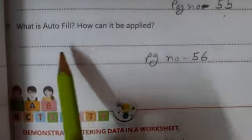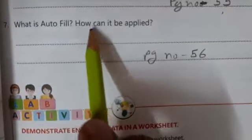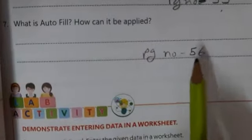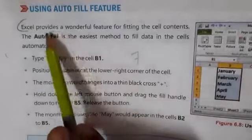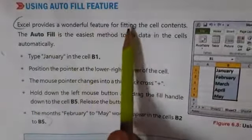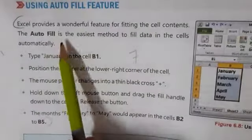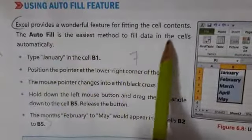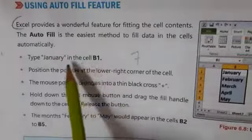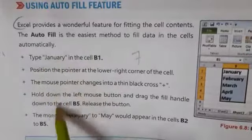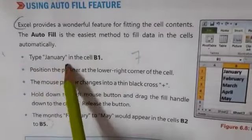Now question number seven: What is AutoFill? How can it be applied? For this, open page number 56. Excel provides a wonderful feature for fitting the cell contents. AutoFill is the easiest method to fill data in the cells automatically. And all the steps you have to write. First, type January in the cell B1.